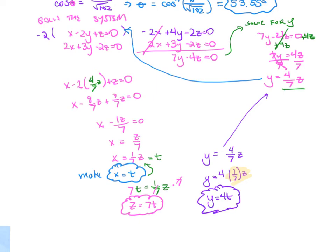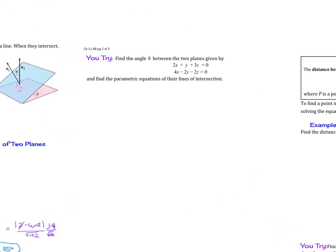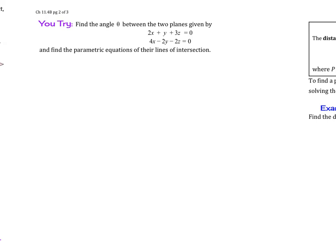So after all of that, the angle between the two planes is 53.55 degrees. For the parametric equations, you solve the system, solving for one variable then another, making one variable equal to t — in this case x equals t — then solving for y and z as well. Now try this example: find the angle theta between the two planes given by 2x plus y plus 3z equals 0 and 4x minus 2y minus 2z equals 0, then find the parametric equations of their line of intersection.